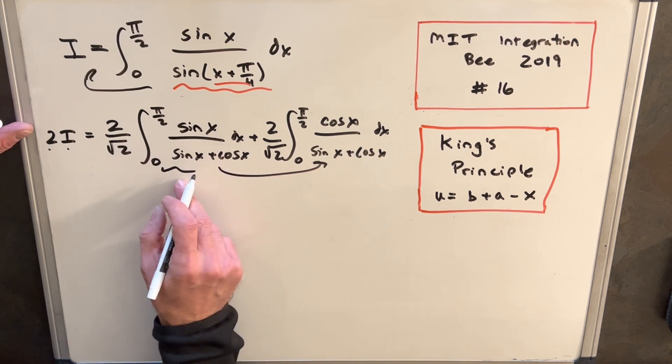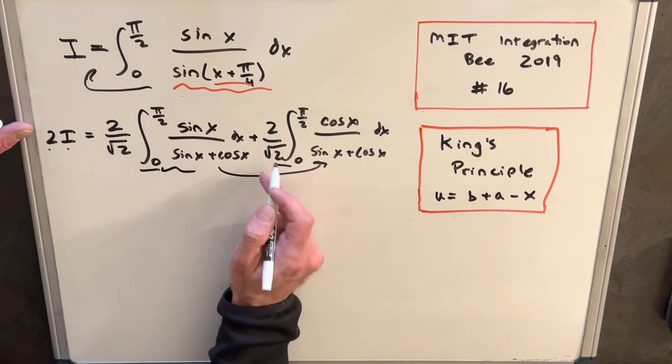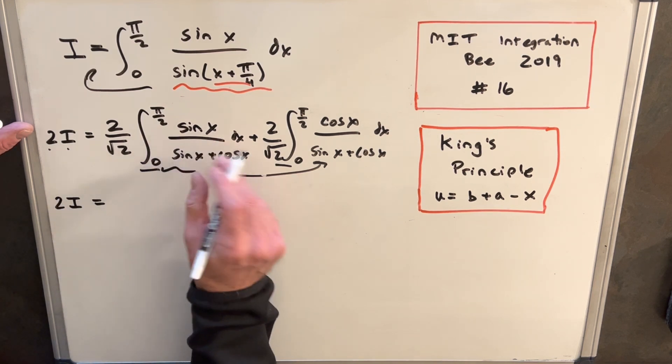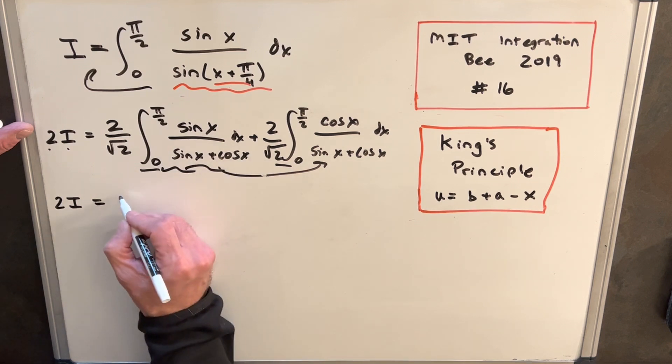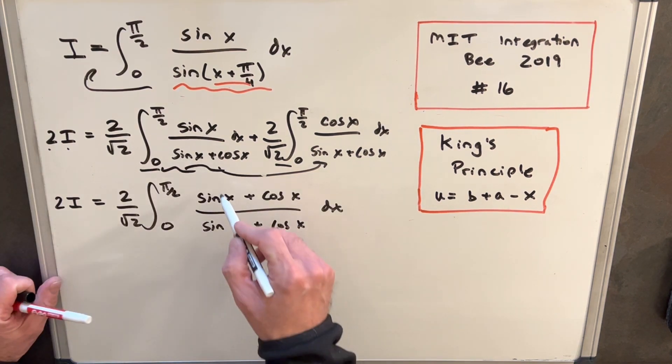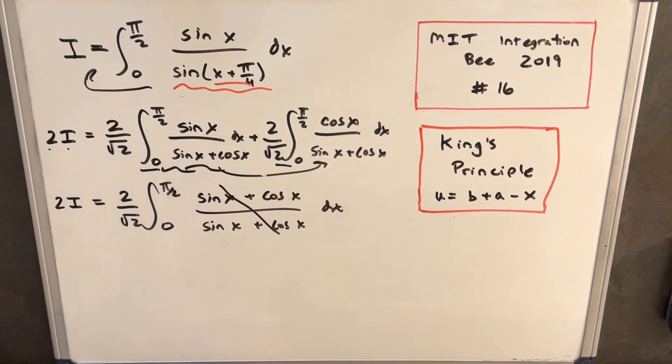And then finally, when we add these together, we've got the same limits of integration, we've got the same constant in front, so we can actually put those things out front and just add the inner terms together. And at that point, we get the simplification that we really want because we can just cancel this whole thing, and the integral is just one.